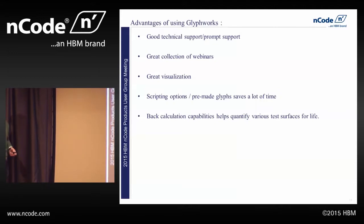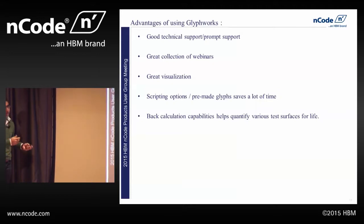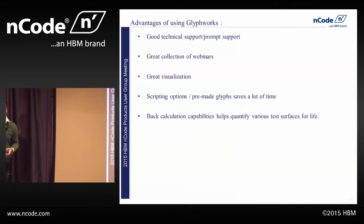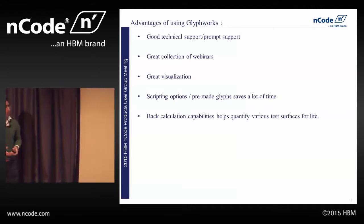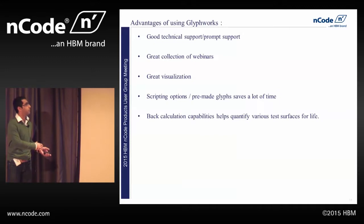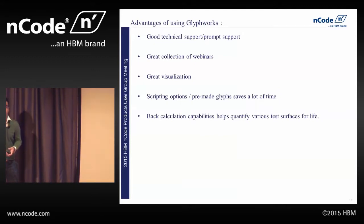So that is essentially the flow that we go through: we collect the data, do the data quality check with our own checks for the data, do the frequency analysis to understand which strain gauge is the worst and the amplitude of those strains in the frequency domain, and then do the Goodman analysis or pass it through the strain life analysis to understand if at all it will break or not.